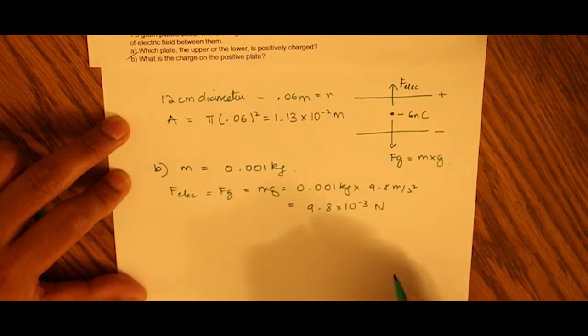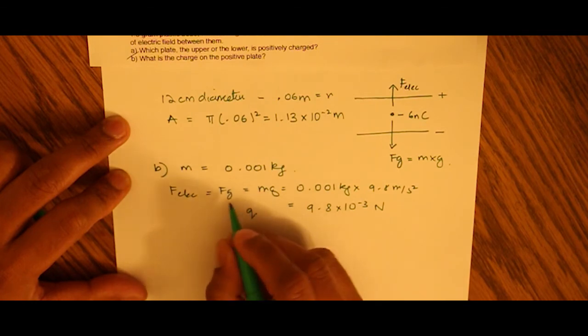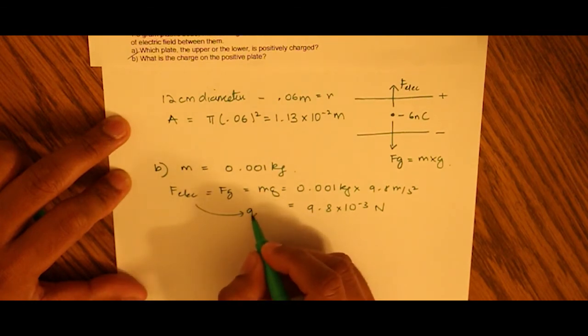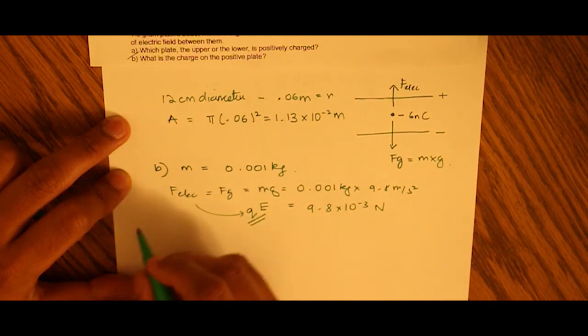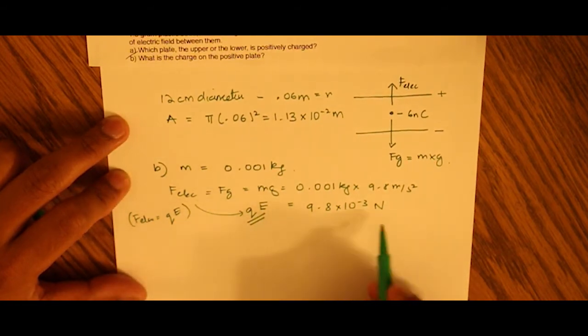Now this leads us to a value of 9.8 times 10 to the negative 3 newtons, which now we can set equal to our force electric of q. Force electric is the charge times the electric field. That's the formula. Force electric equals charge times electric field.